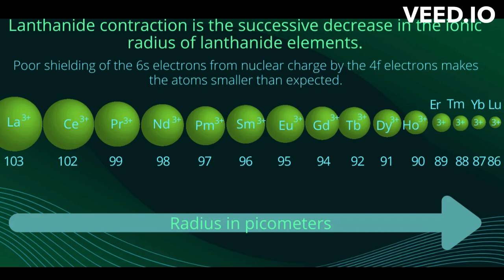In the lanthanide series, there is a secular decrease in the atomic as well as ionic radii of trivalent ions as the atomic number increases from cerium to lutetium. This decrease in size of atoms and ions is known as lanthanide contraction. Although the atomic radii do show irregularities, the ionic radii decrease steadily from La to Lu.